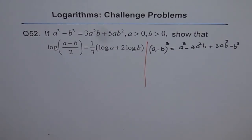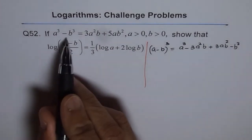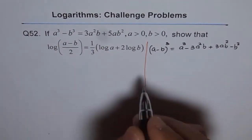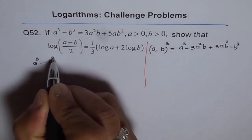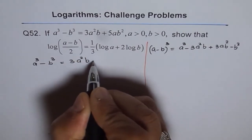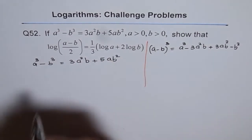That is what is a minus b whole cube. Now, in this expression, we are given a cube minus b cube equals to something. Let me write this down again. We have a cube minus b cube equals 3a square b plus 5ab square.